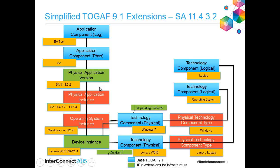Those are the extensions you turned on in the front part of the workshop. The earlier approach had a little too much information, so what we have now is simplified. You can turn on the older extensions if you want to capture it to that level. The physical application instance and operating system instance have been turned off as standalone definition types. Now you're capturing a physical application version, the device instance it's running on, and capturing those items as properties. So you have a device instance like my Lenovo laptop, which has an operating system installed — Windows 7 — and a physical app version running on it, which is a type of physical app.